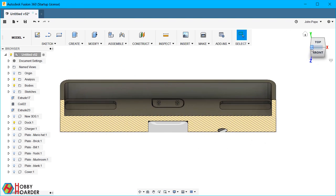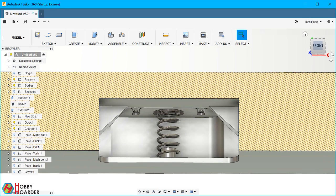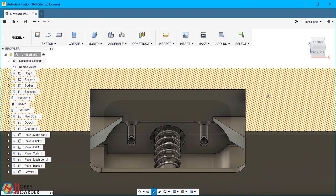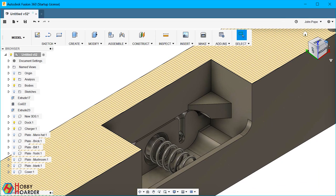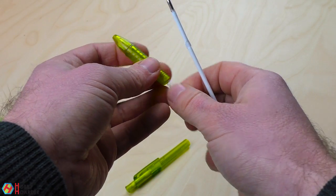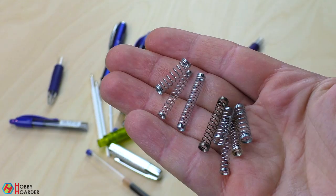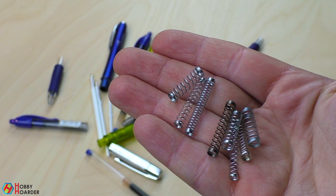And this is what the inside of the dock looks like. It's designed so that you can print everything without using any supports. As for the spring, find an old pen and take one from there. The slot has a slope so that springs of different sizes can all fit inside.